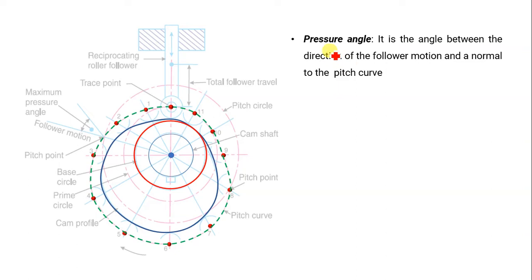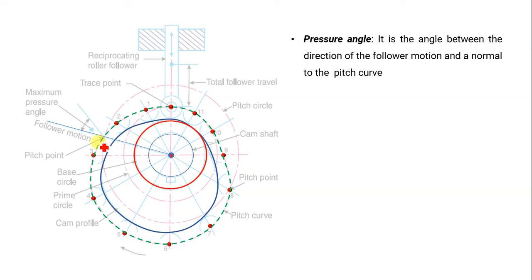The next terminology is pressure angle. It is the angle between the direction of the follower motion and a normal to the pitch curve. The follower motion is such that it is passing through the center of rotation. This is the direction of follower motion. If we draw a perpendicular — or normal — to the pitch curve, then the angle between these two lines is the pressure angle.